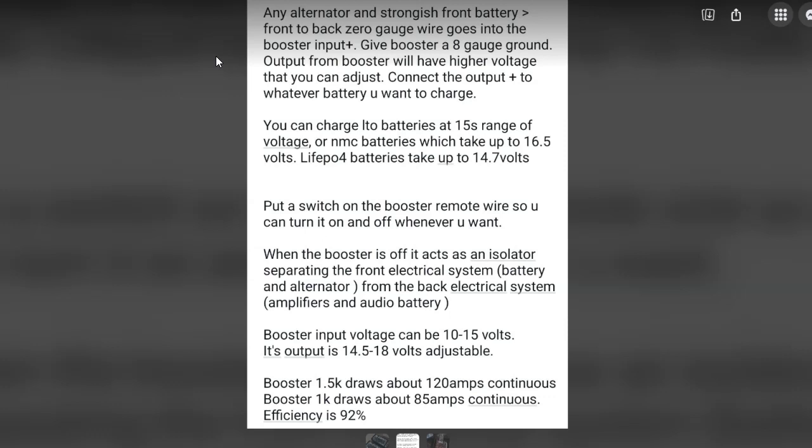Booster 1.5K draws about 120 amps continuous. Booster 1K draws about 85 amps continuous. Efficiency is 82 percent. So if you had that 120 amp and it's drawing 120 amps and you're at, let's say 12 and a half volts because you're really sucking that out of your alternator, and you are boosting up to 14 and a half volts, then you already lose about 15 percent. And then efficiency is 92, so you lose another eight percent or so. You're losing almost about 25 percent of the amps. So if you're pushing at 120 amps, you're actually only coming out 90 to 95 amps coming out.